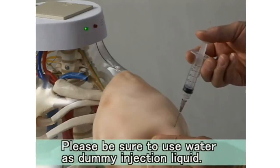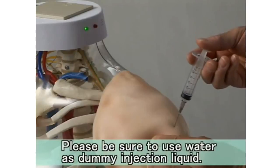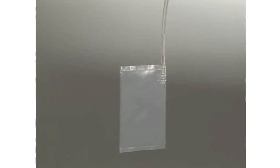Only when the green light is lit can you inject dummy liquid. The liquid injected to the model will be drained to the drainage bag through the tube.